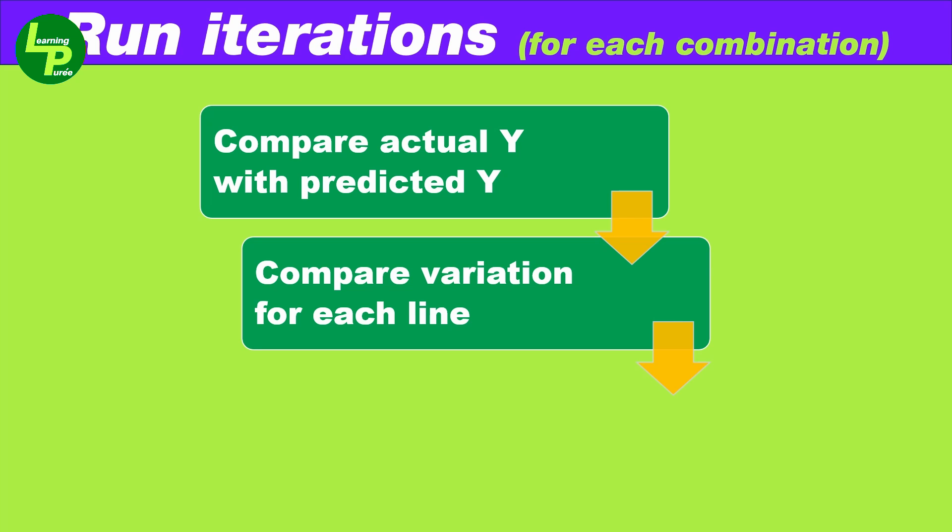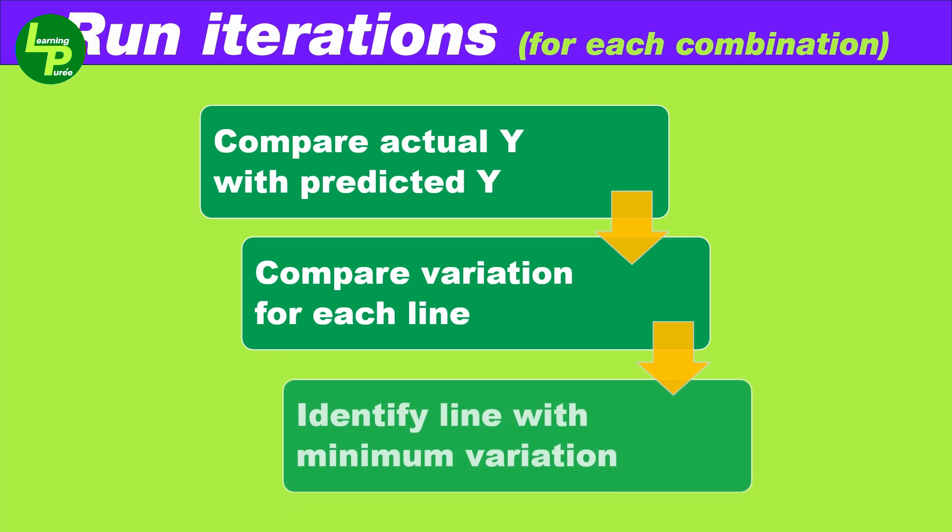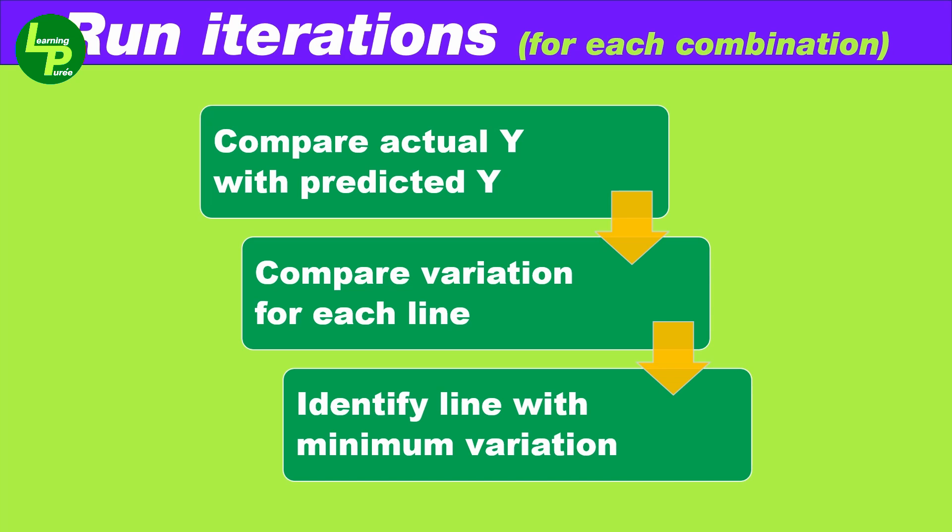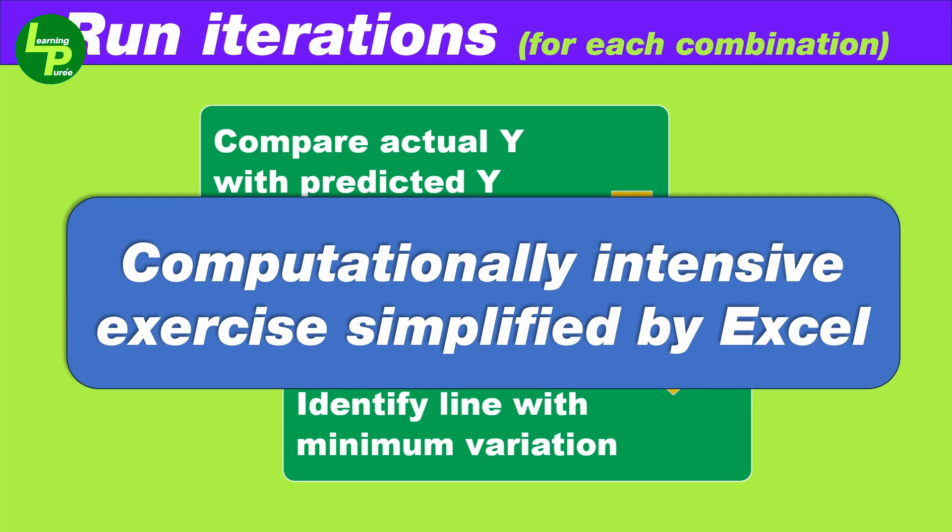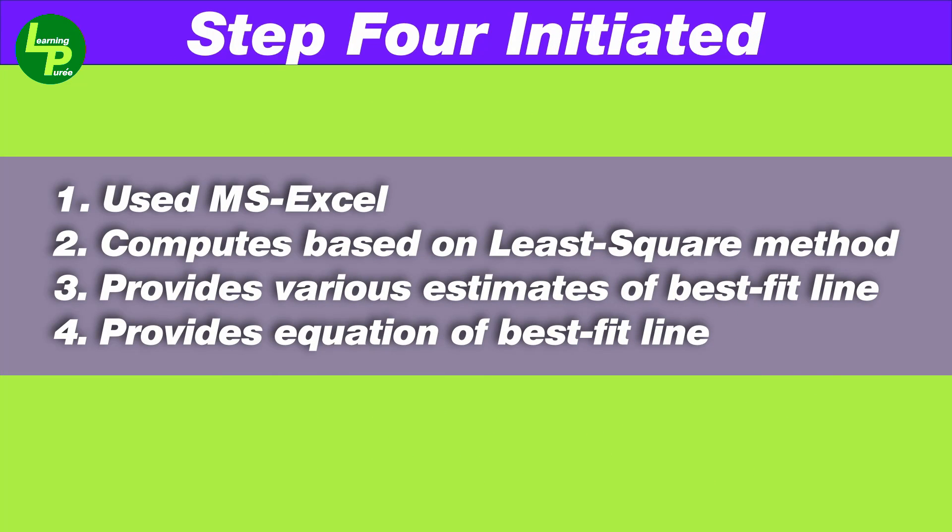Note that as mentioned earlier, this is not the only check to perform. We also need to compare the actual values of y with that of the predicted values and compare their variances as well. Further, we need to identify the line with minimum variation between actual and the predicted value. However, this process if conducted manually is computationally intensive and better managed by analytical software. In the fourth step, we have used Excel for all these computations to identify the best fit line.